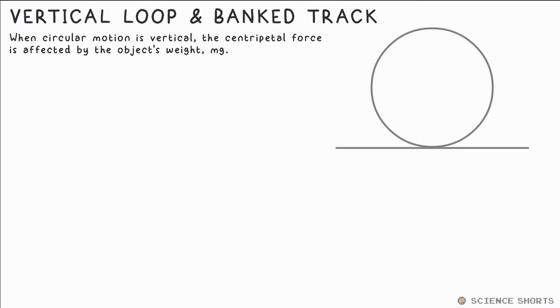If it's a vertical loop, like a loop-to-loop on a roller coaster, you have to take into account the support force or reaction force of the track, we might call that s. At the bottom, mg is pulling down and s is pushing up. The centripetal force is one minus the other, the resultant of the two forces.